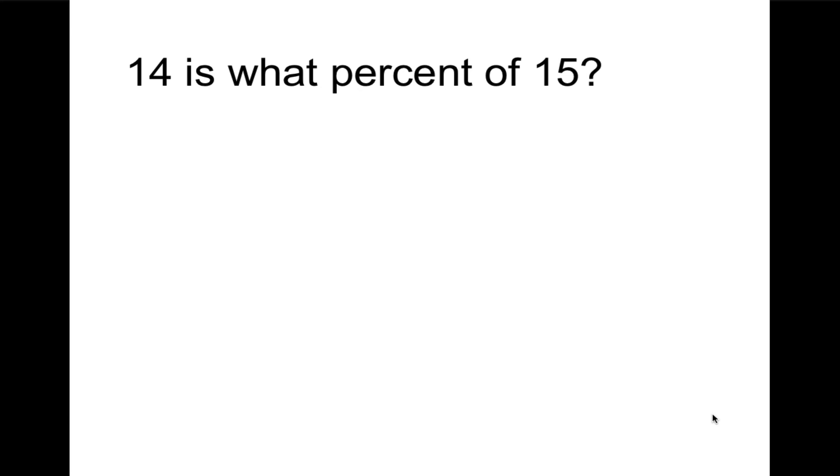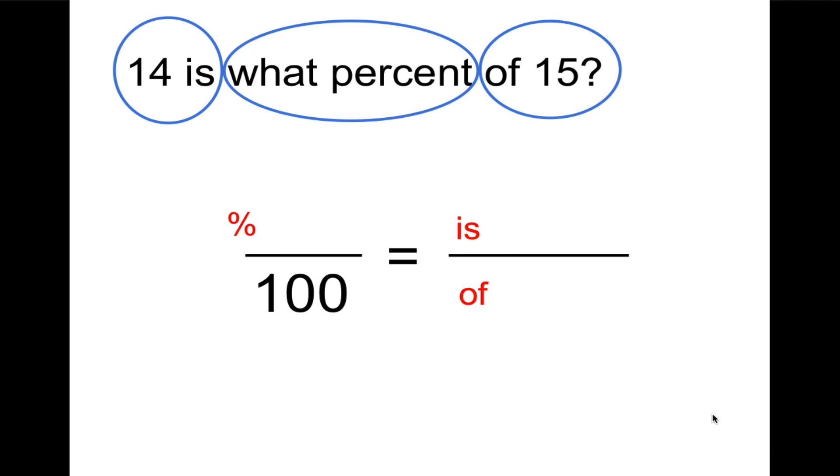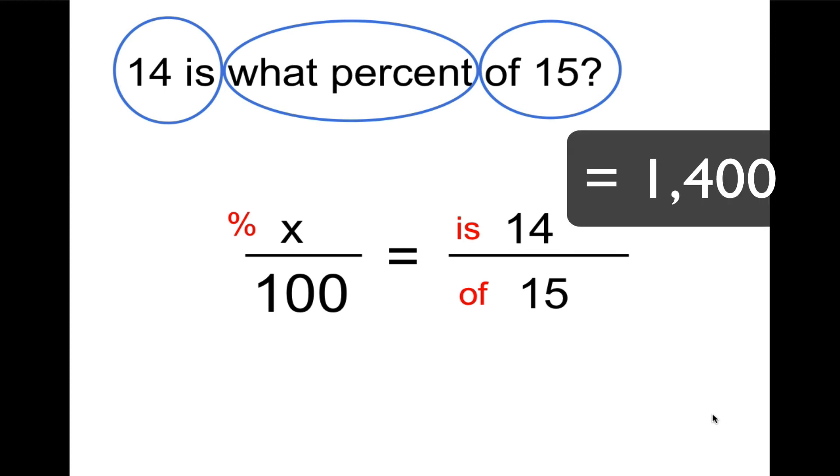Next, 14 is what percent of 15? You do this one. We'll check back. Here's the frame. Here's the hints, and the circles. 14 is the part. The missing piece is the percent, and we have the whole. So we're going to say 14 is the part, X is the percent, and 15 is the whole. So 14 times 100 equals 1,400 divided by 15 equals 93.3.